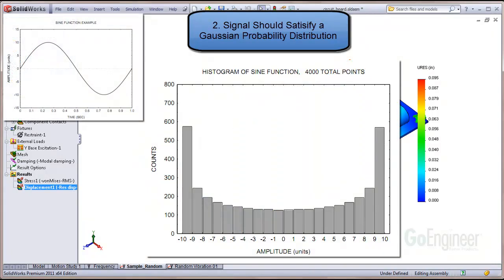In contrast, here is a histogram of a pure sine wave signal, one frequency. It does not satisfy the Gaussian probability distribution. Most of the time, the signal likes to stay at its maximum amplitude, in this case plus 10 or minus 10.